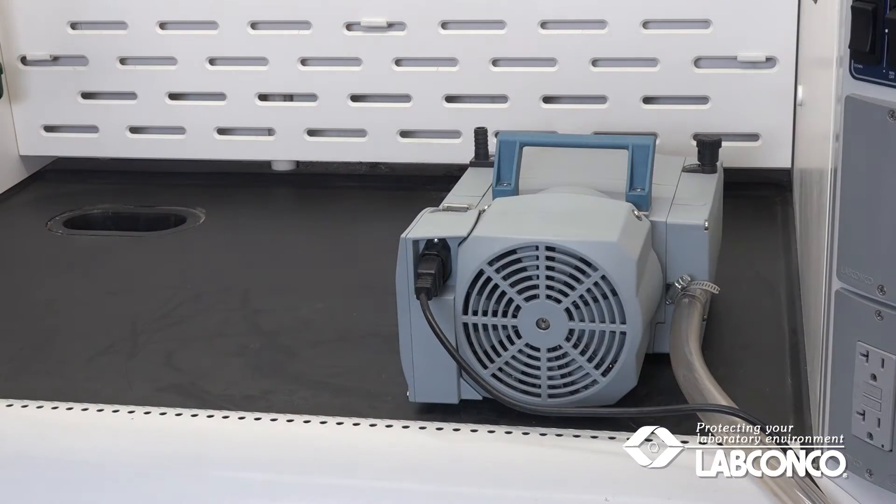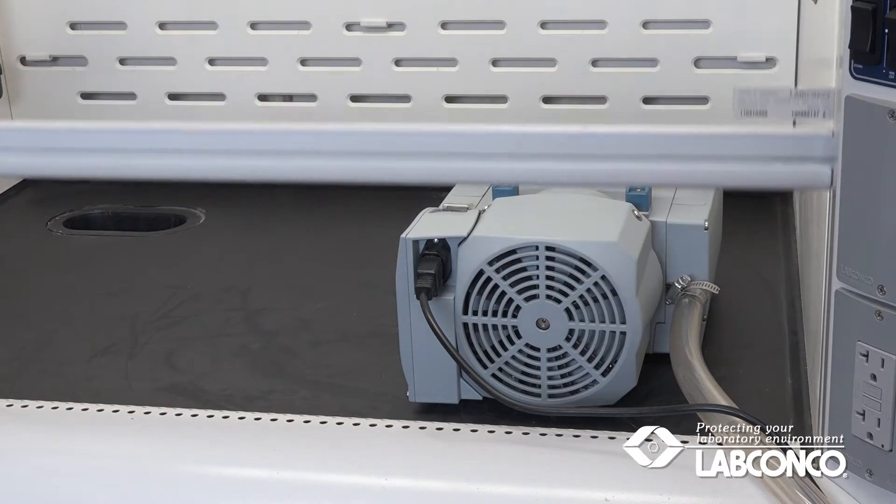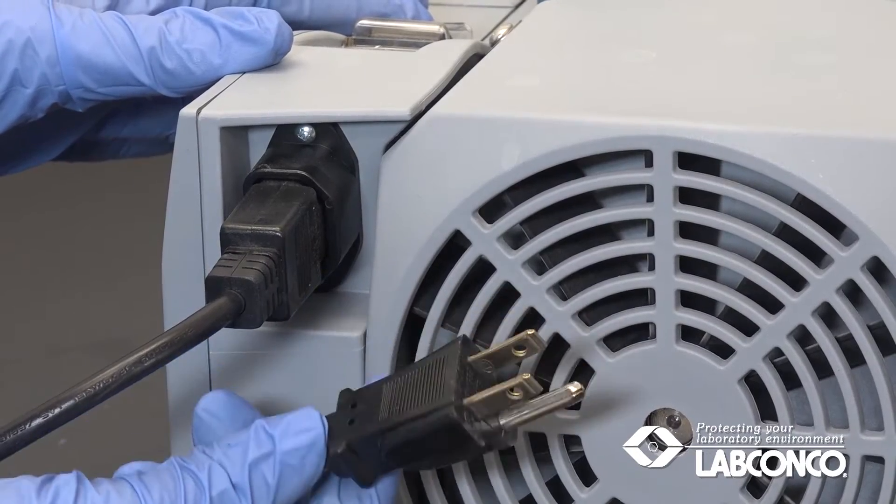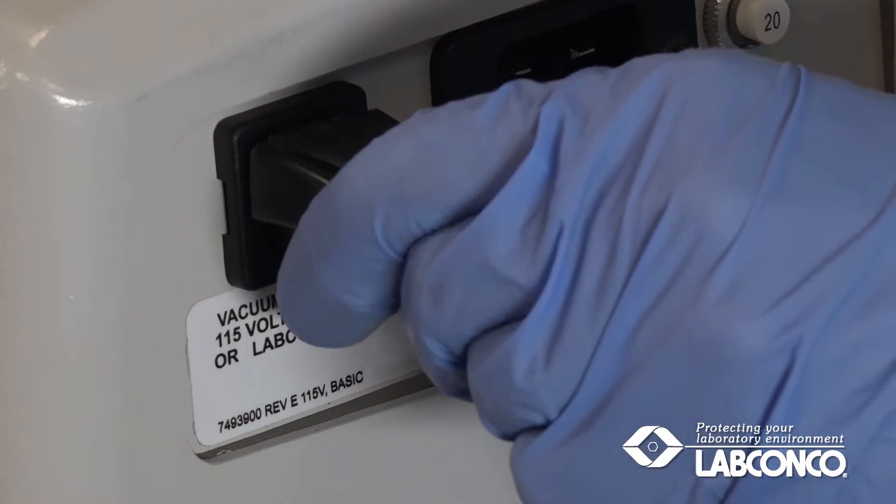The pump should be vented into or located within a fume hood. It must also be plugged into the back of the RapidVap to allow automatic start of the pump.